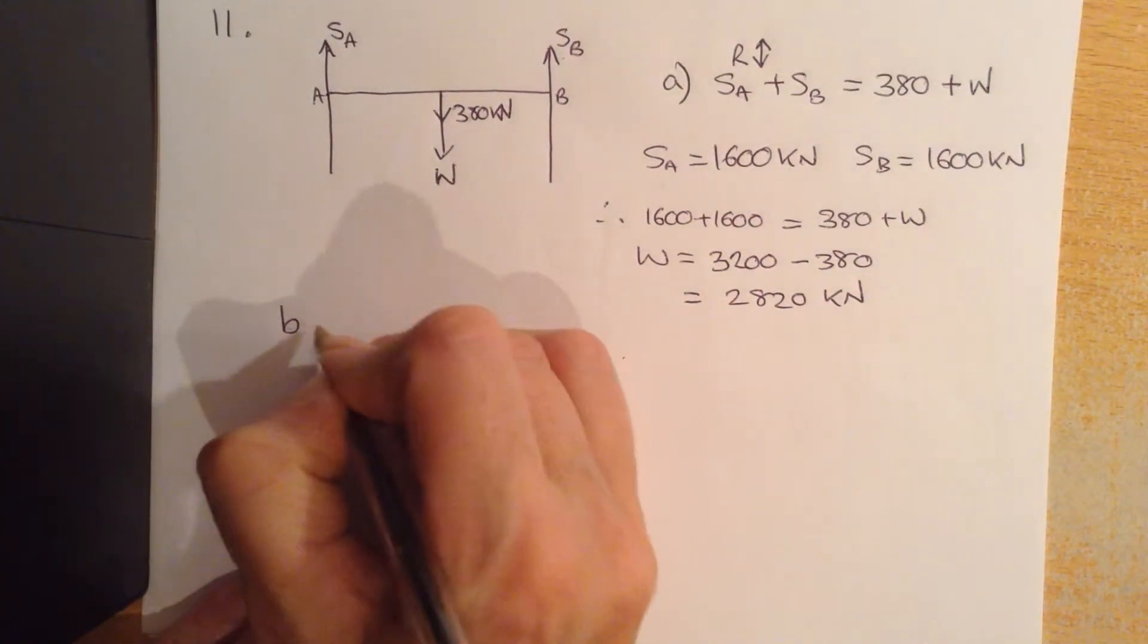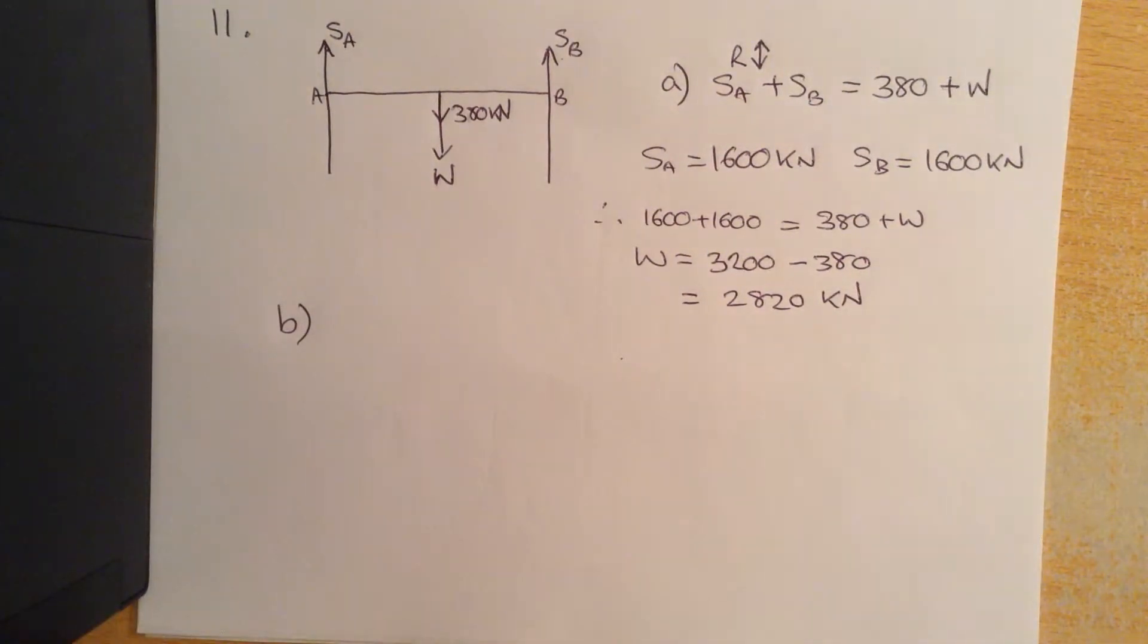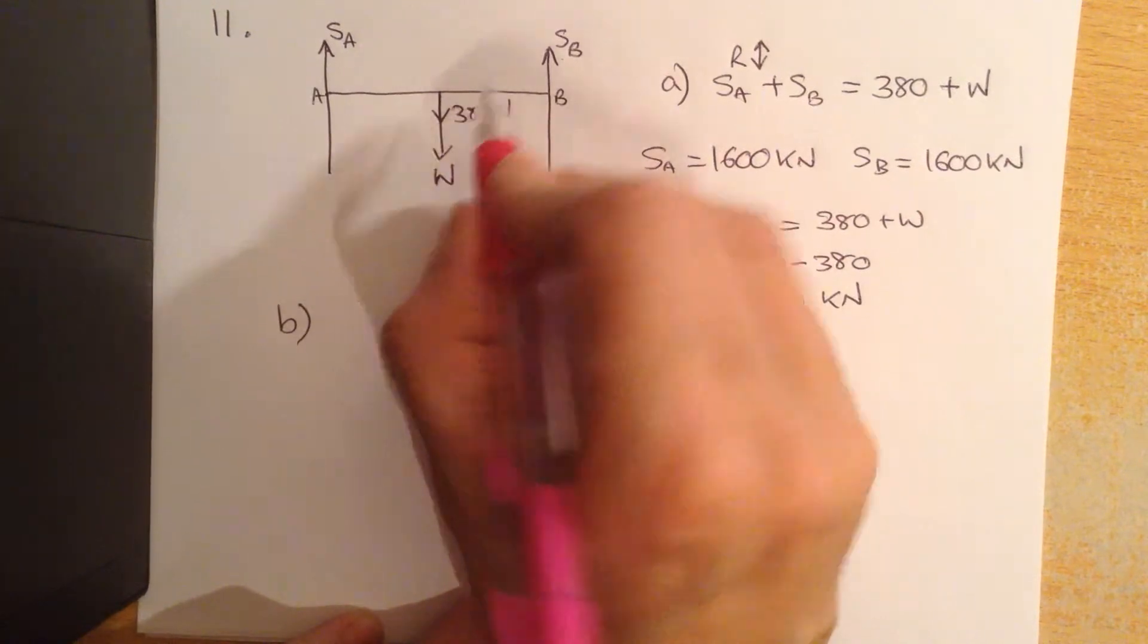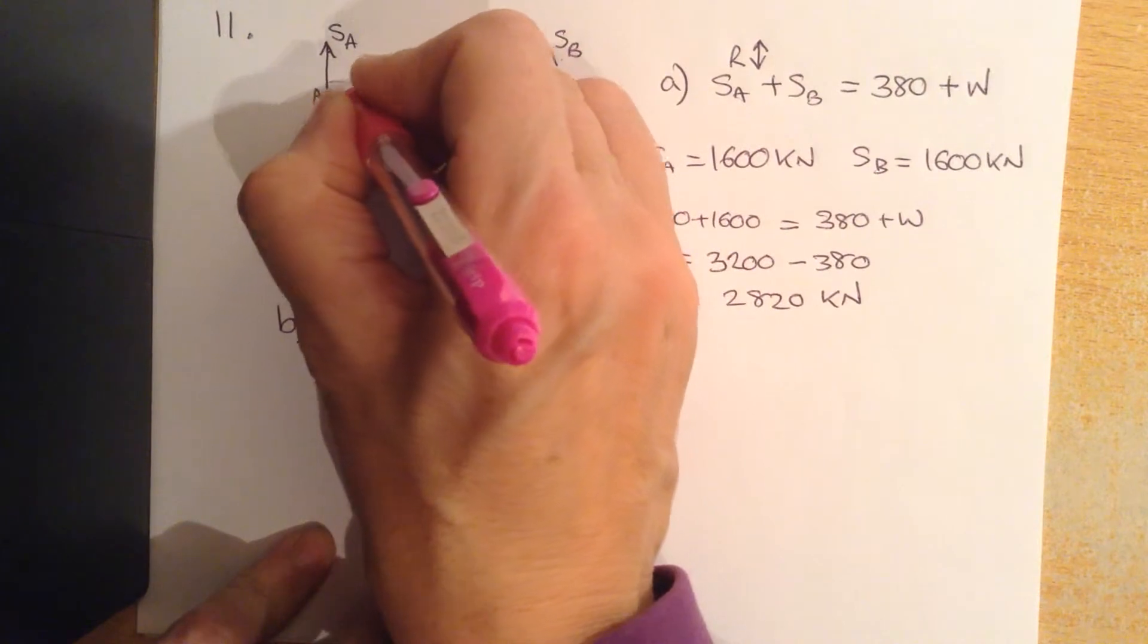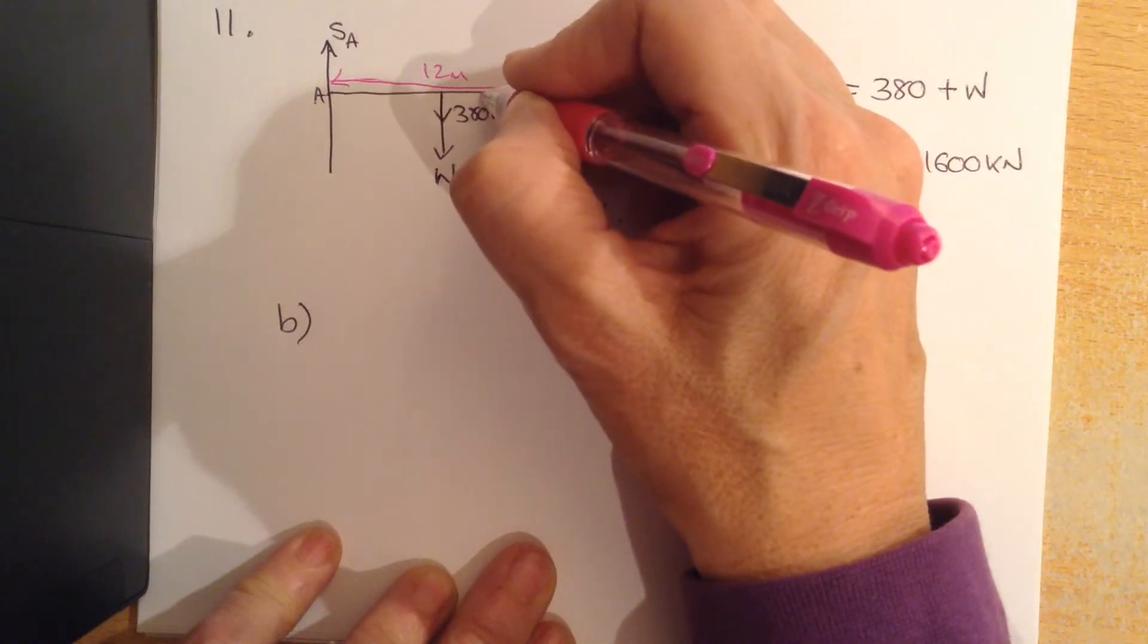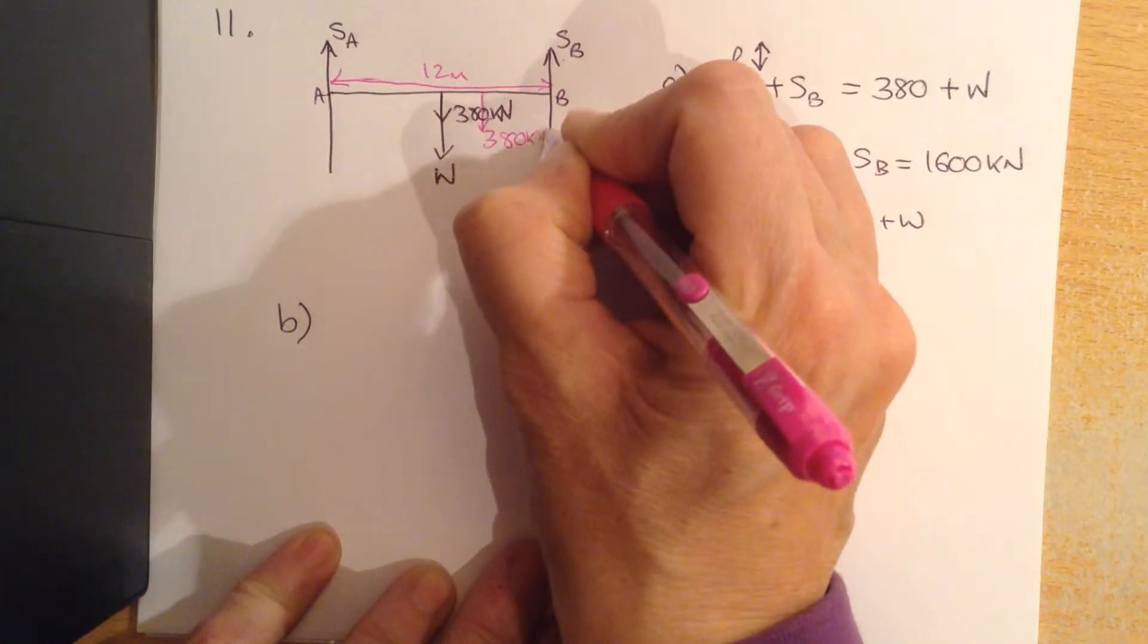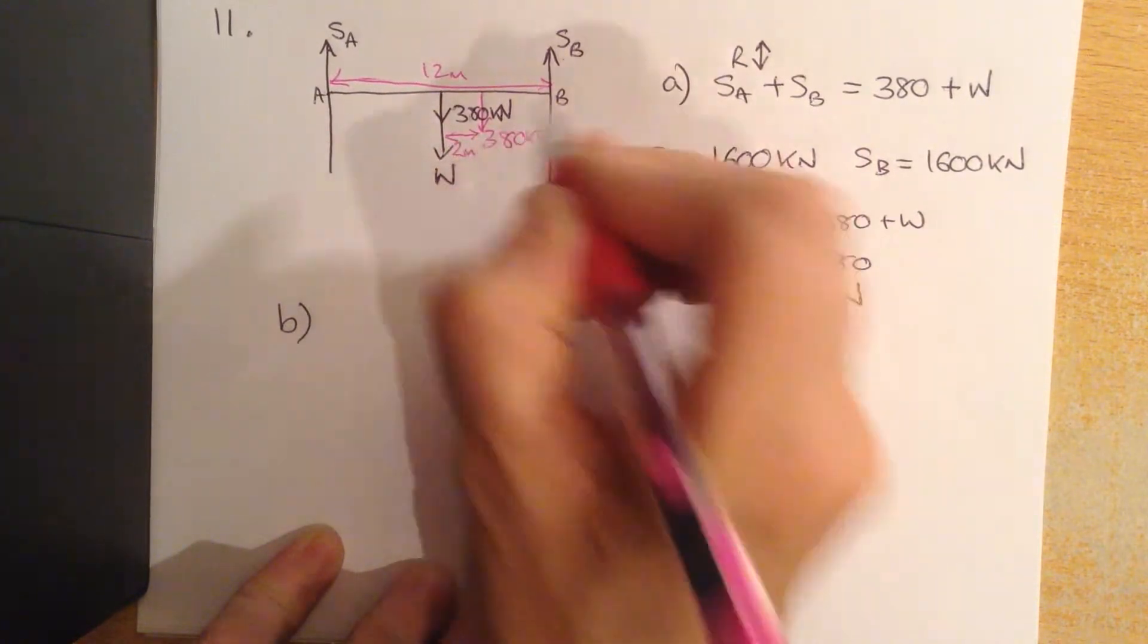Now part B says the load is moved a distance 2 meters, so let's assume it goes this way. This whole distance here is 12 meters, so if we draw another load this way here, this is where the load is going to be now, 380 kilonewtons, and that distance there is 2 meters.